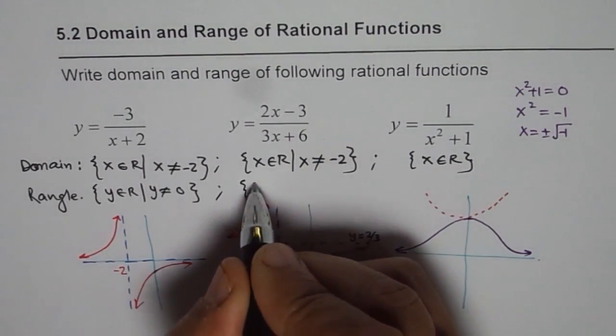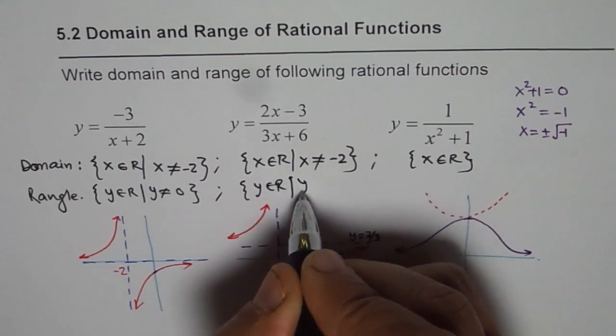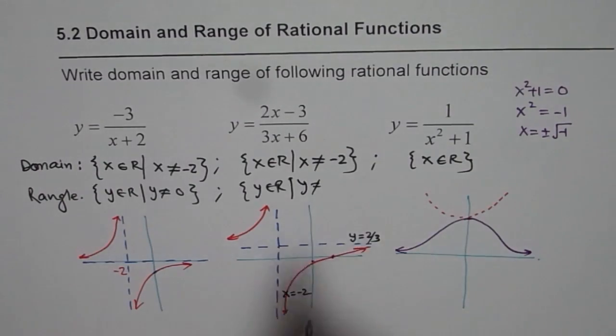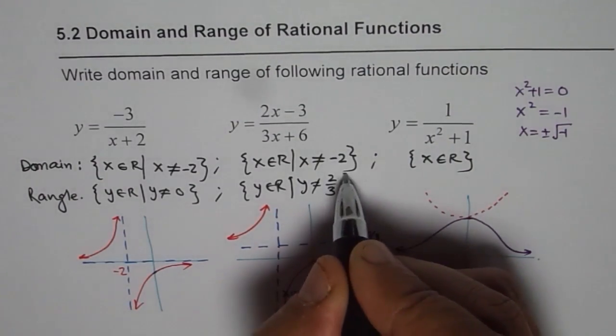In the second case, y belongs to real numbers, but y is not equal to 2 over 3. So that was easy.